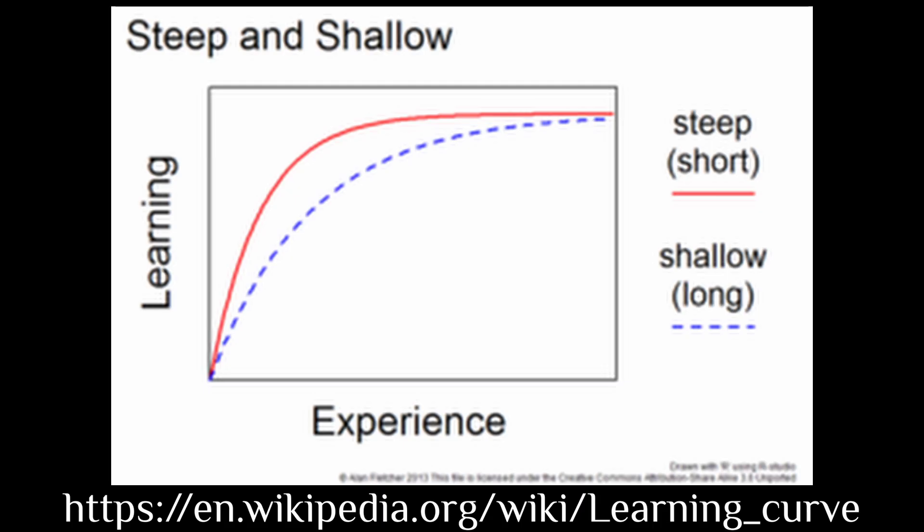To quote the abstract: 'I argue that data becomes temporarily interesting by itself to some self-improving but computationally limited subjective observer once he learns to predict or compress the data in a better way, thus making it subjectively simpler and more beautiful. Curiosity is the desire to create or discover more non-random, non-arbitrary, regular data that is novel and surprising — not in the traditional sense of Boltzmann and Shannon, but in the sense that it allows for compression progress because its regularity was not yet known.' This drive maximizes interestingness, the first derivative of subjective beauty or compressibility — that is, the steepness of the learning curve.